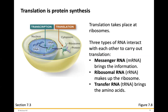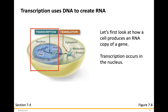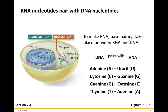Transfer RNA brings amino acids to link up and form the protein strand. Transcription uses DNA to create RNA. To make RNA, base pairing takes place between RNA and DNA. In this case, adenine pairs with uracil because there is no thymine in RNA. Cytosine still pairs with guanine, guanine pairs with cytosine, and the DNA thymine pairs with adenine in RNA. It is still base pair complementation.